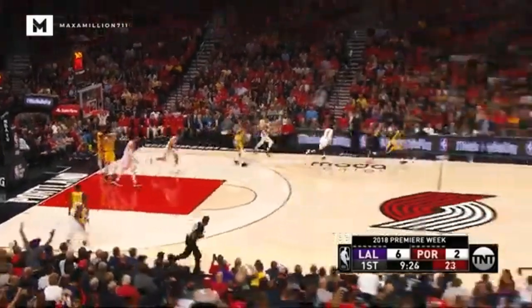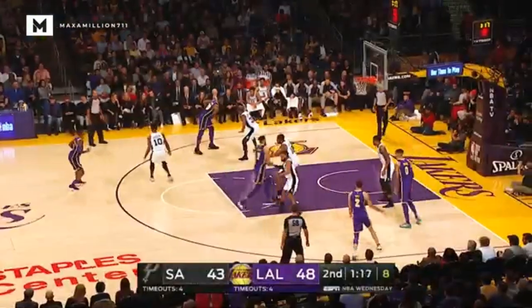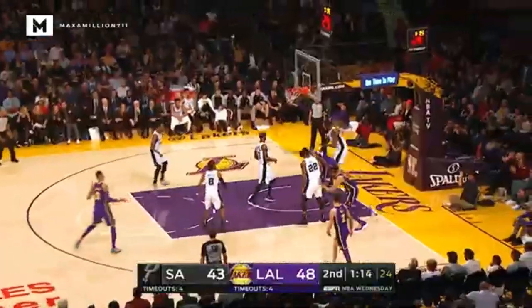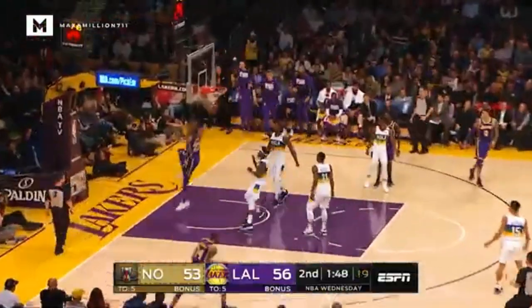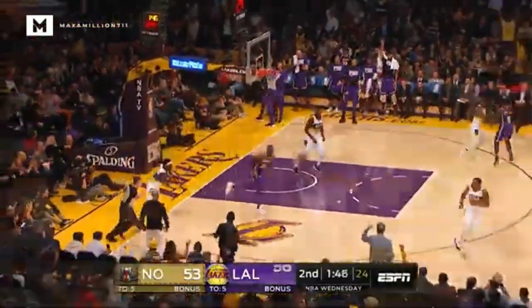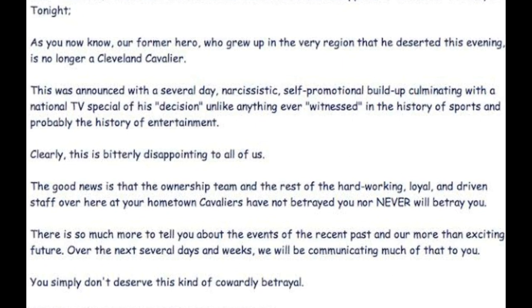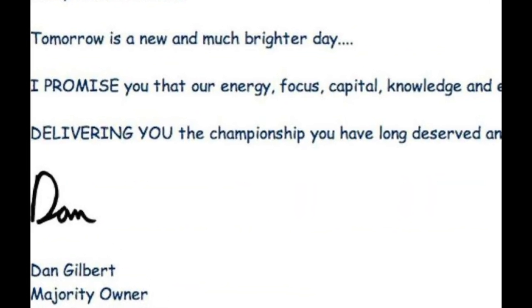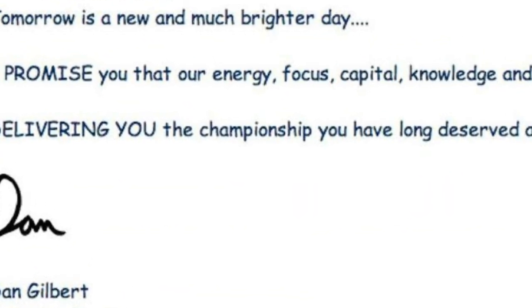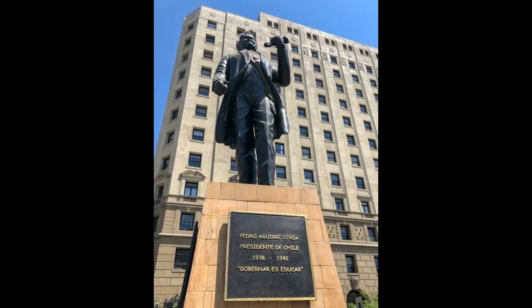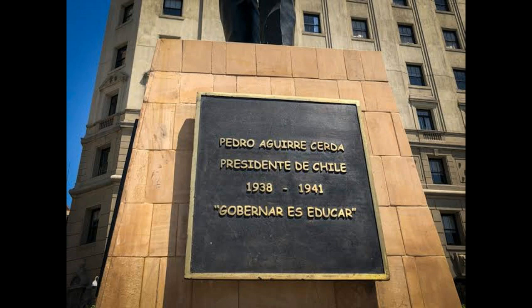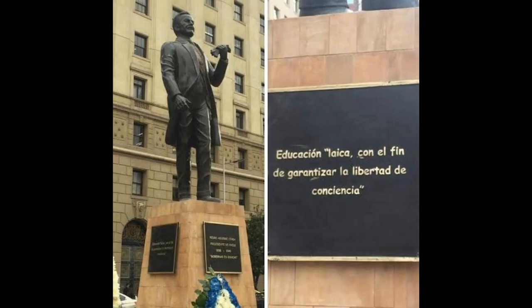In the summer of 2010, NBA superstar LeBron James left the Cleveland Cavaliers in free agency. The owner at the time, Dan Gilbert, reacted by posting a letter to Cavaliers fans, and the letter was heavily criticized for its use of Comic Sans. In July 2018, a statue of former Chilean President Pedro Aguirre Cerda was inaugurated in Santiago, and the plaque of the monument was written in Comic Sans, which drew negative attention on social media.